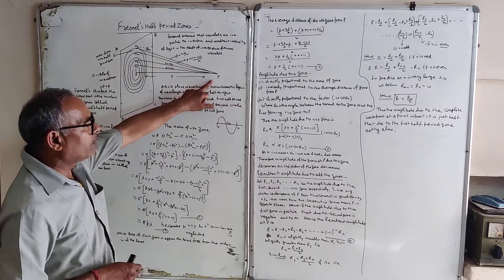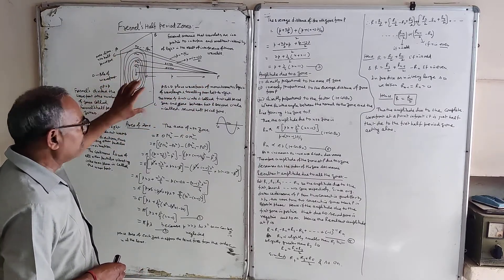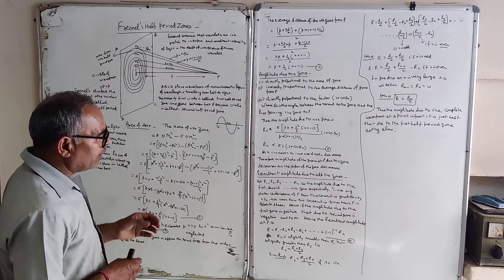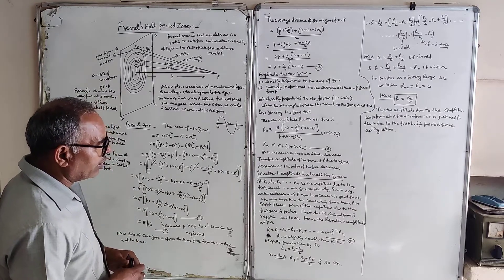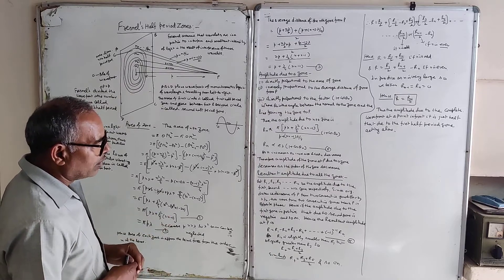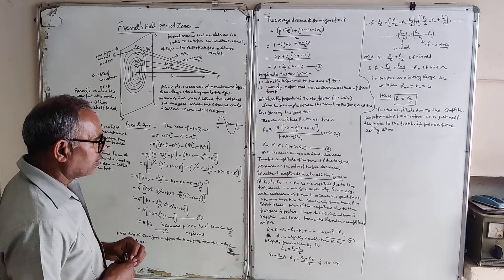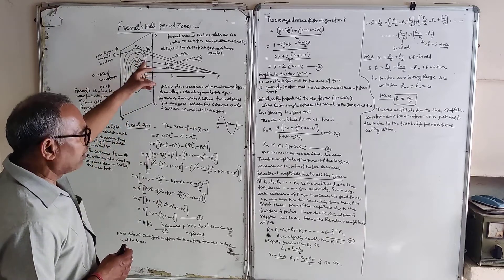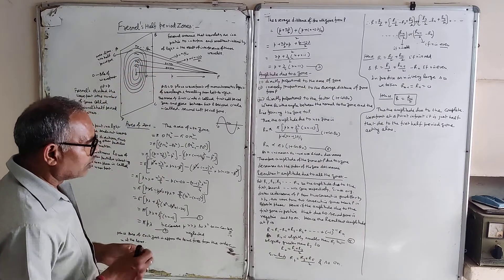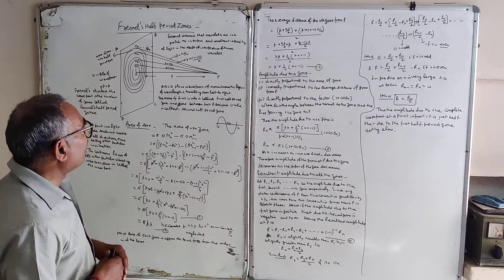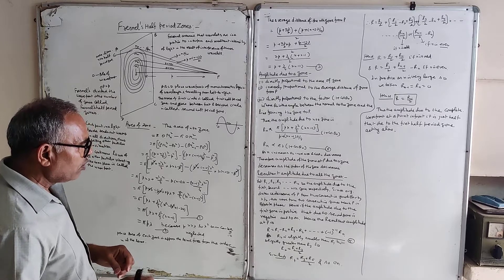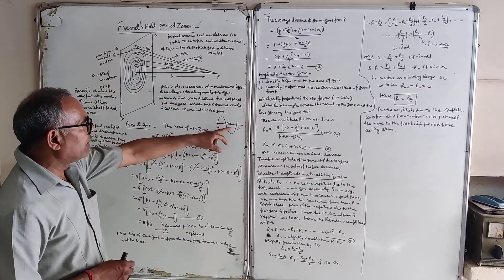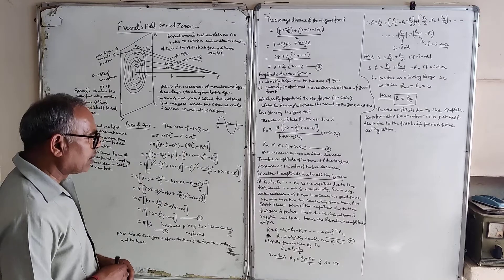The resultant amplitude at point P due to all zones producing monochromatic light must be found. Let r1, r2, r3, ... r_n be the amplitudes due to the first, second, and up to the nth zone respectively. Since consecutive zones differ in path by lambda/2, two consecutive zones reach P in opposite phase — that is why it is called the half period zone.